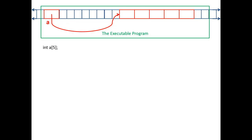The green area is actually your executable — your main, the program that is on the hard drive and then gets loaded by the operating system and runs. When you write 'int a[5]', you actually have your entire array inside your executable. So if you write 'int a[5000]' and you look at the size of your executable, it grows. When your program runs, it brings your program into memory, and as soon as it comes into memory, your array comes to life and you can work with it.